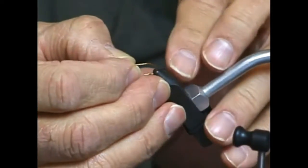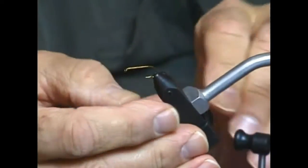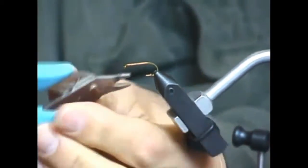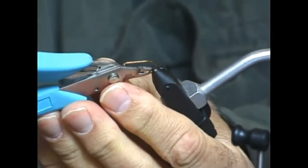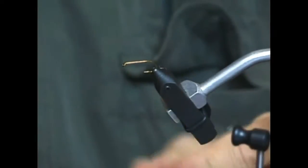First I'm going to mount the hook in a true rotary vise so the hook shank is parallel with the tabletop. Then I'm going to de-barb the hook like this to remove the barb.